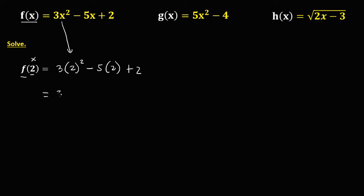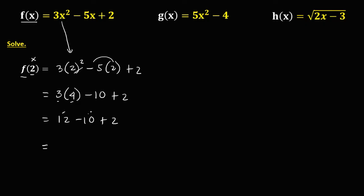Simplify: 3 times 2² — 2² is 4. Then negative 5 times 2 is negative 10, plus 2. So we have 3 times 4, which is 12, minus 10, plus 2. So 12 minus 10 is 2, plus 2 gives us 4. Therefore, f(2) is equal to 4.